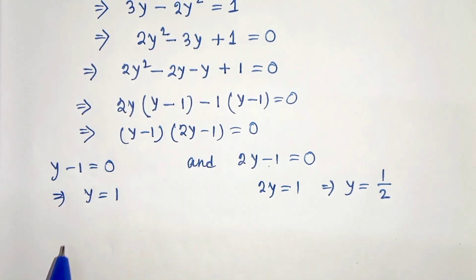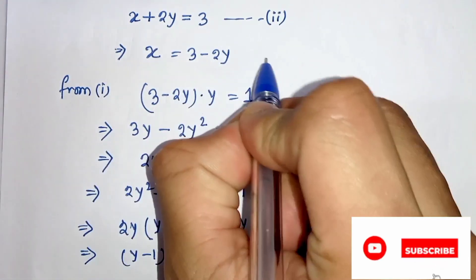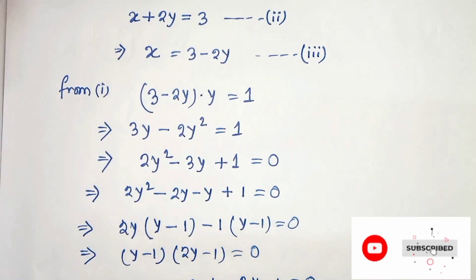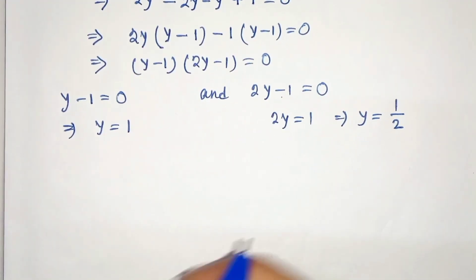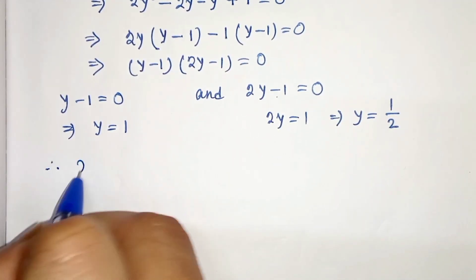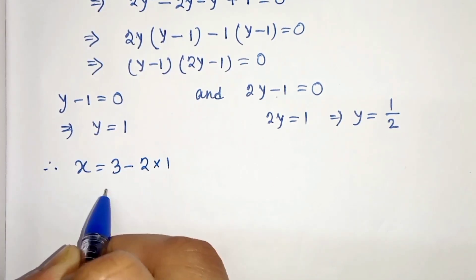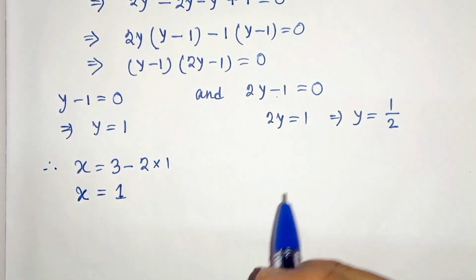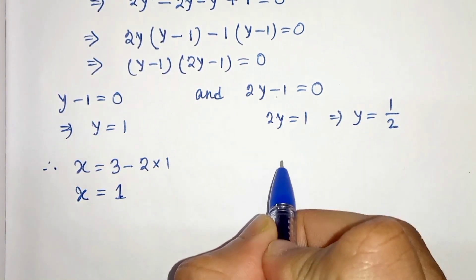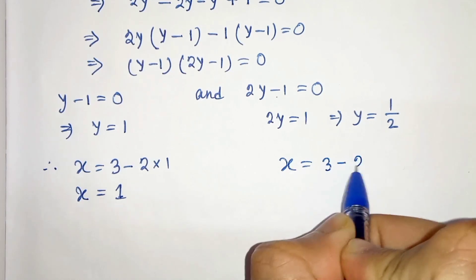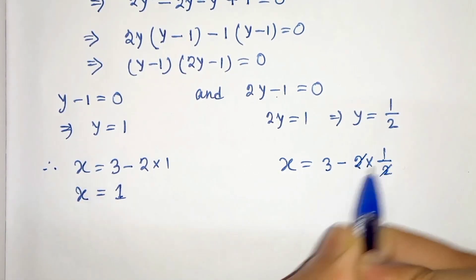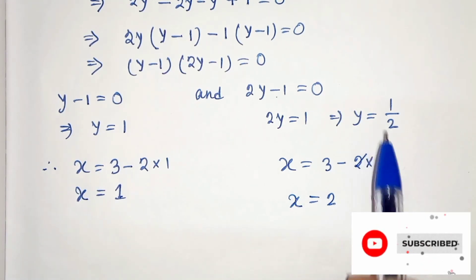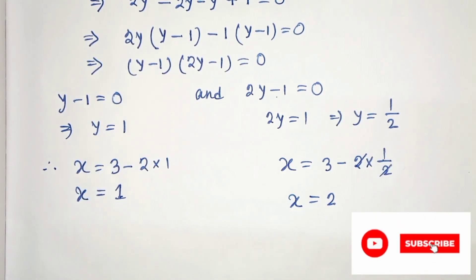For y equals 1 we can calculate x using equation 3, x equals 3 minus 2y. Substituting y equals 1, we get x equals 3 minus 2 times 1, which is 3 minus 2 equals 1. For y equals 1/2, we get x equals 3 minus 2 times 1/2; the 2 cancels, giving 3 minus 1 equals 2. So x equals 2.